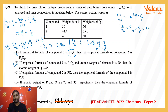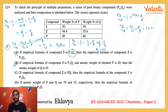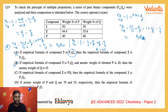This ratio equals 10/8, which simplifies to 5/4. So the correct empirical formula for compound 1 is P₅Q₄, which matches what option C states. Therefore, option C is also correct.